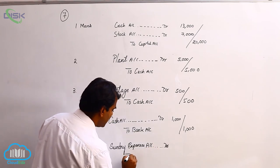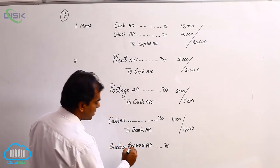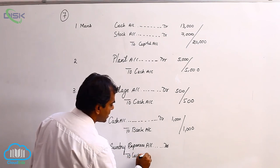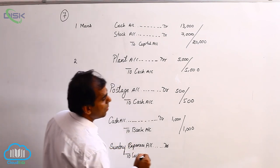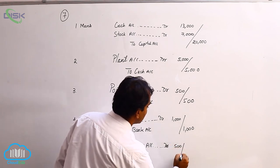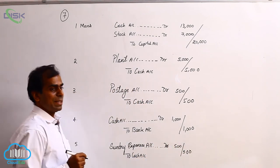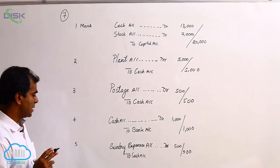Paid means cash. Cash is real account, it is going out. So credit what goes out. So cash we are crediting because it is going out. So how much, 500. Narration you can write as sundry expenses paid, being sundry expenses paid.